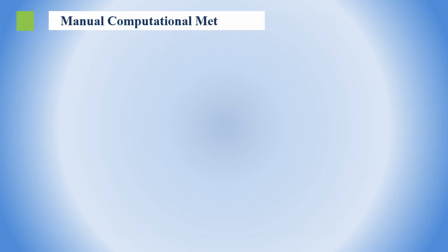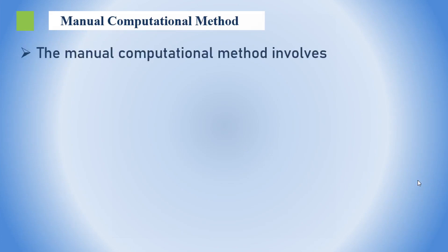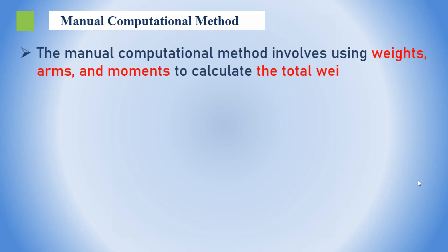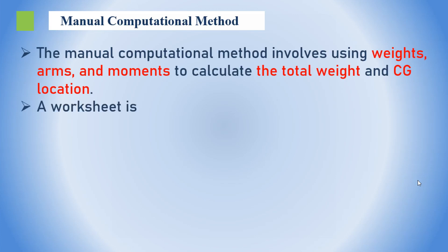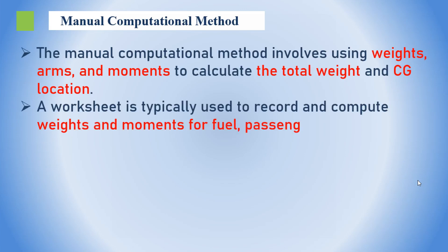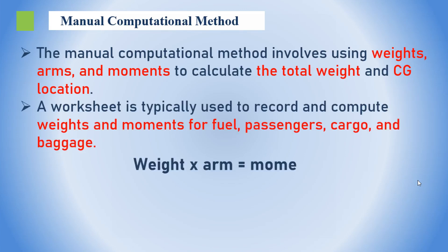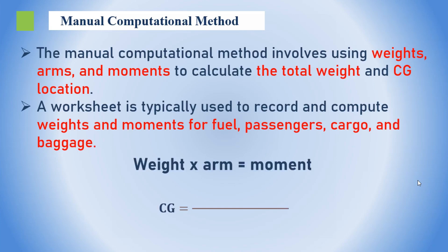The manual computational method involves using weights, arms, and moments to calculate the total weight and CG location — like solving a puzzle where each piece represents different components of the aircraft's weight and balance. The product of weight and arm equals moment, and the center of gravity equals total moment divided by total weight.